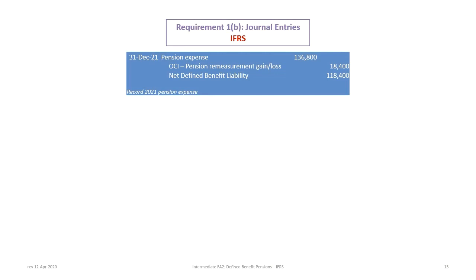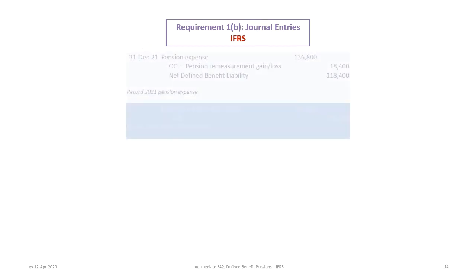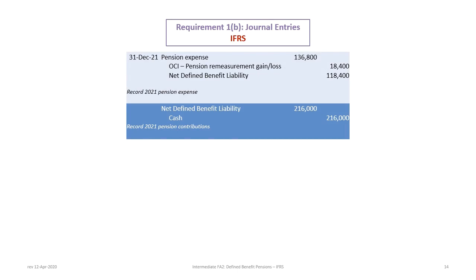Now we can complete the journal entries. On December 31st, we debit pension expense for $136,800, credit OCI — pension remeasurement gain or loss — for $18,400, and credit the net defined benefit liability for the balance of $118,400. The last piece of the journal entry deals with the actual pension contribution: debit the net benefit liability for $216,000 and credit cash.